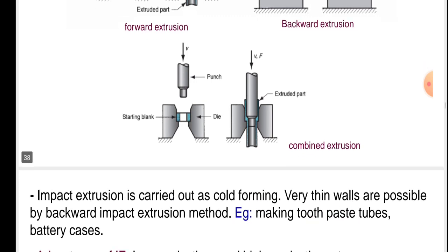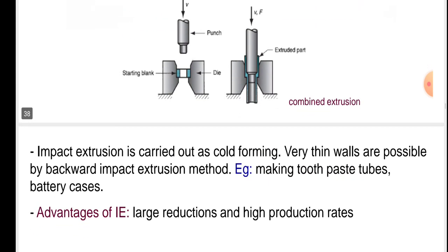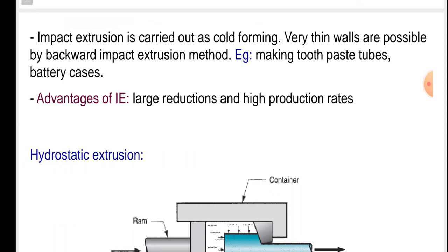In this process, impact extrusion is carried out as cold work forming. Very thin walls are possible by backward impact extrusion method. Examples include making toothpaste tubes and battery cases.